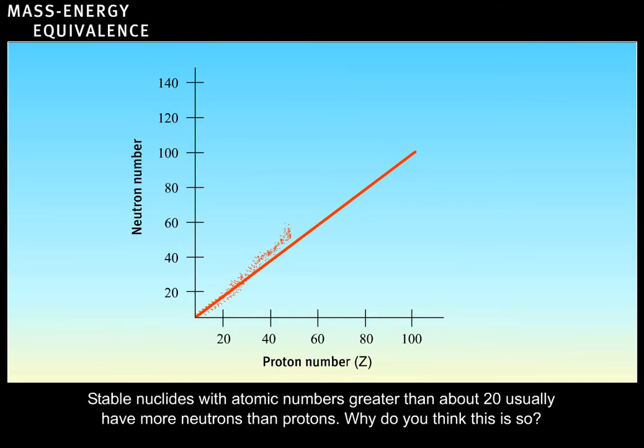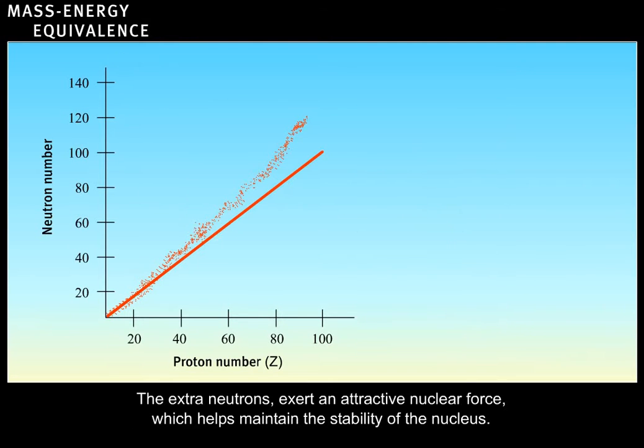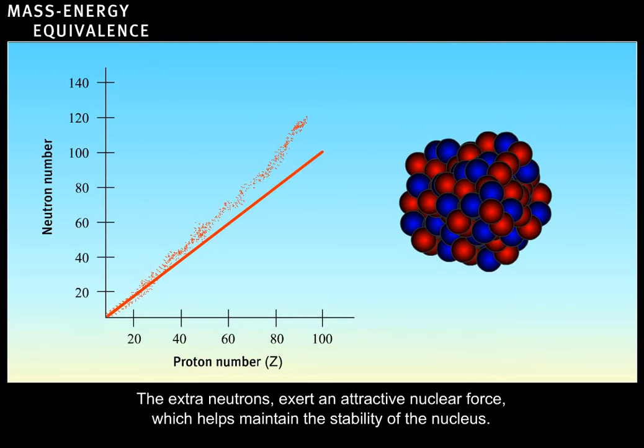Stable nuclides with atomic numbers greater than about 20 usually have more neutrons than protons. Why do you think this is so? Correct. The extra neutrons exert an attractive nuclear force which helps maintain the stability of the nucleus.